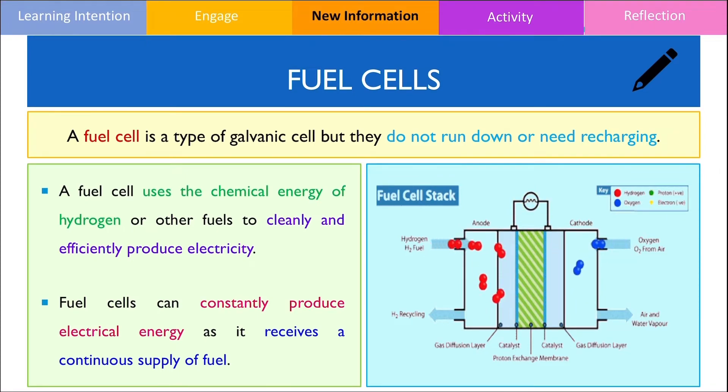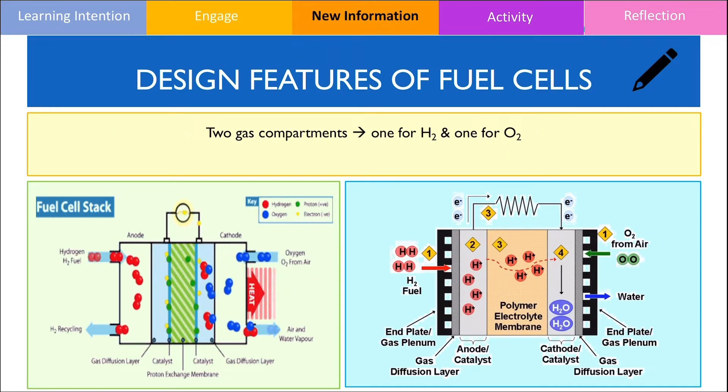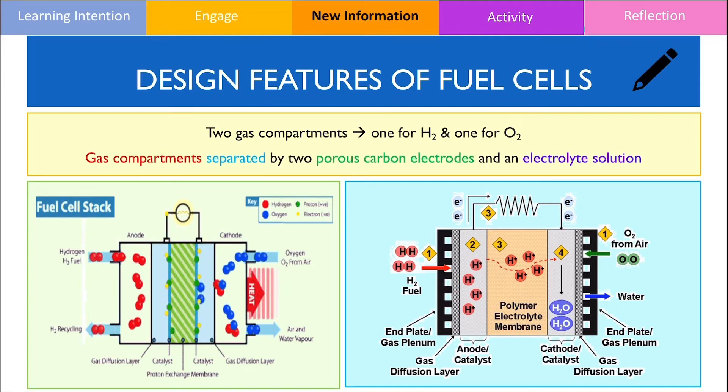Let's closely inspect the design features of the hydrogen fuel cell. A fuel cell contains two gas compartments found on either side, one which receives hydrogen and the other which receives oxygen. Because both reactants are in the gaseous state, porous carbon electrodes are used and together with the electrolyte solution, this helps separate the sites of oxidation and reduction.